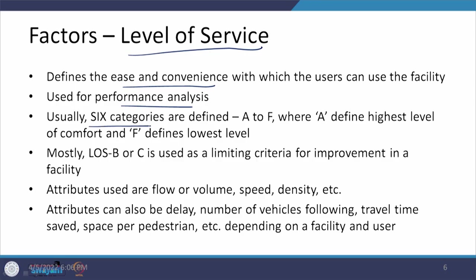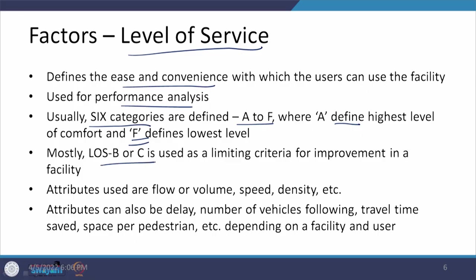Level of service is defined in six categories from A to F, where category A defines the highest level and category F defines the lowest level of comfort, ease, driving speeds, or whatever factor is considered. In most cases when talking about facilities in urban areas or rural highway conditions, we target LOS B or C. In urban areas we try to go up to C, and in rural highway or multilane highway conditions we try to achieve LOS B. If LOS B is already reached, it means the facility needs to be enhanced in size.